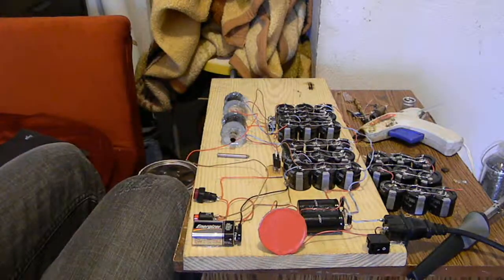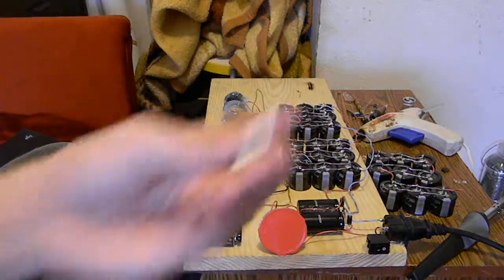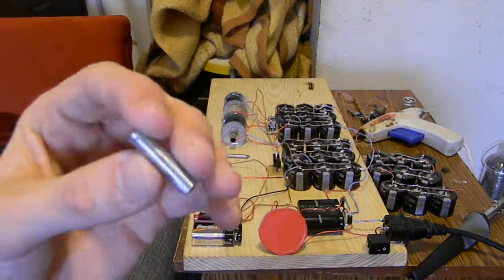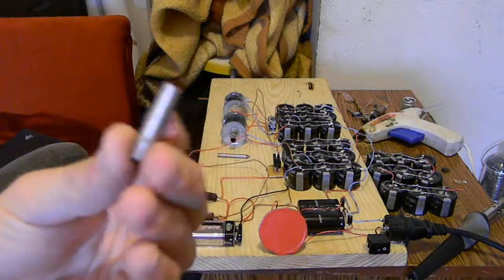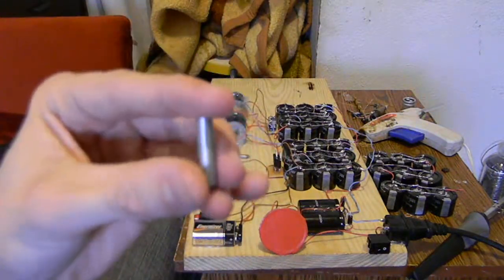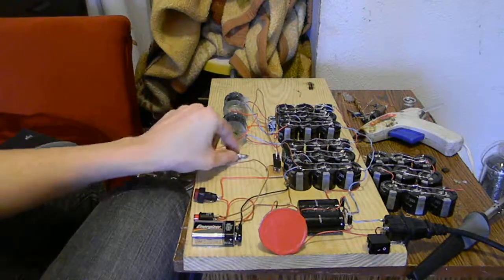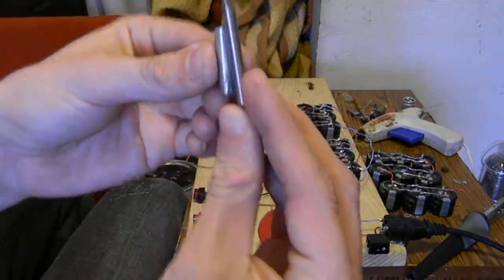Good electrical contact, because there was a lot of rust on it. And then this projectile, which is the actual projectile that will be fired with this gun when it is completed. So as you can see, there is a slight difference in diameter.